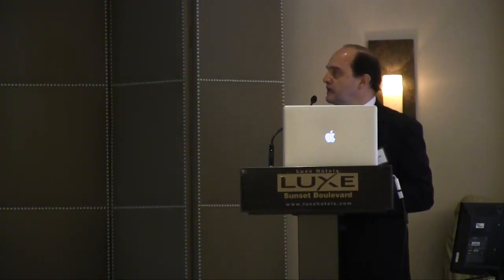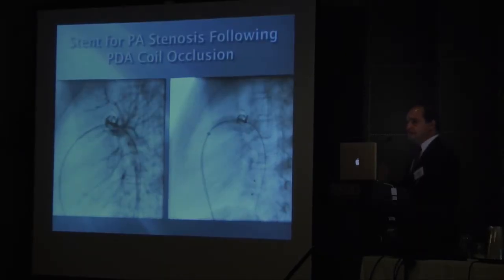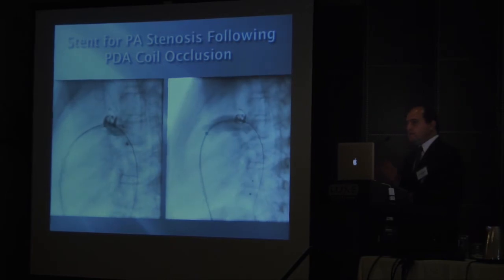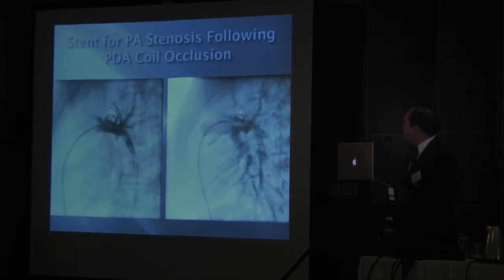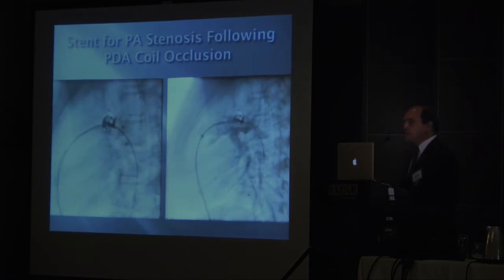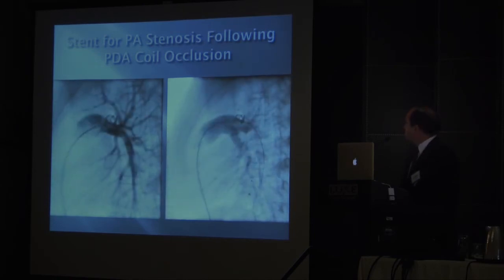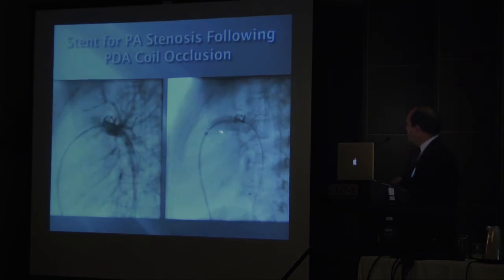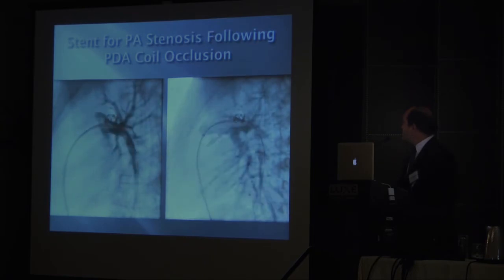This is a patient from the tail of the previous talk — an individual who came to Vegas, had had a procedure done in a state neighboring Nevada that begins with a C. They had very aggressively used coils to close the ductus, but unfortunately created an obstruction in the left pulmonary artery. The patient came to us, we assessed a significant gradient to the left pulmonary artery, and elected to use a stent in the proximal left pulmonary artery to relieve the obstruction caused by the massive coils.